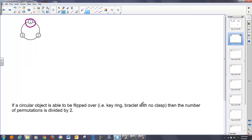If you have a circular object that is able to be flipped over, then, for instance, here are some examples. A key ring or a bracelet, and this is going to become very important, something without a clasp. So the number of permutations is basically n minus one, which is the number of circular permutations, divided by two. So you've got to keep that in mind.